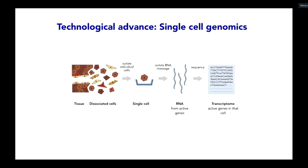Two major lines of technological advances have happened over the last several years. The first — and the one that motivated the field most dramatically because it happened quickly and had immediate impact — is single-cell genomics, particularly single-cell RNA-seq: taking a piece of complex tissue, dissociating it into cells, capturing those cells increasingly faster and cheaper, isolating their RNA, converting it to cDNA, barcoding it for the cell identity, sequencing it, and then apportioning reads to know which cell they came from.